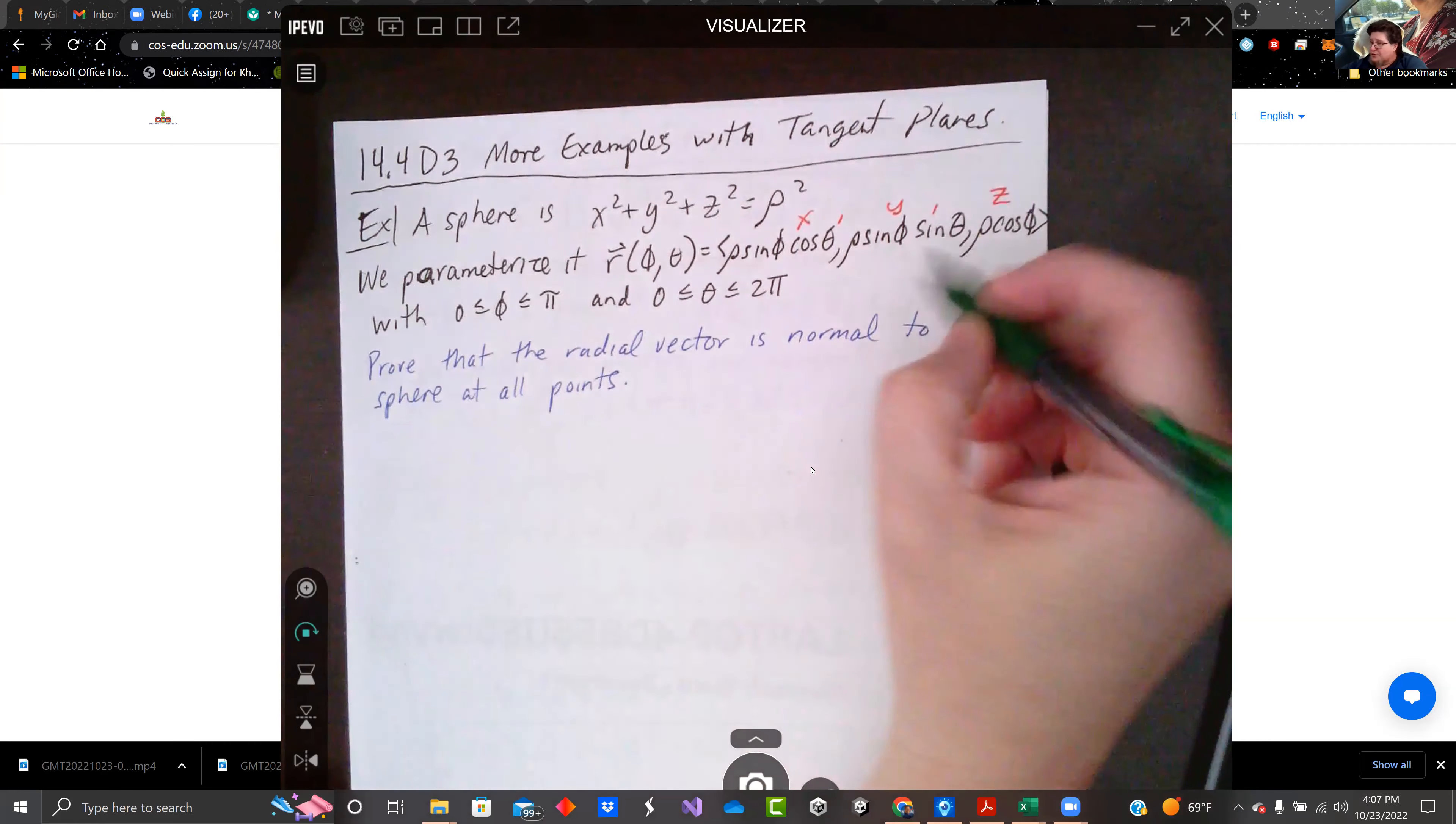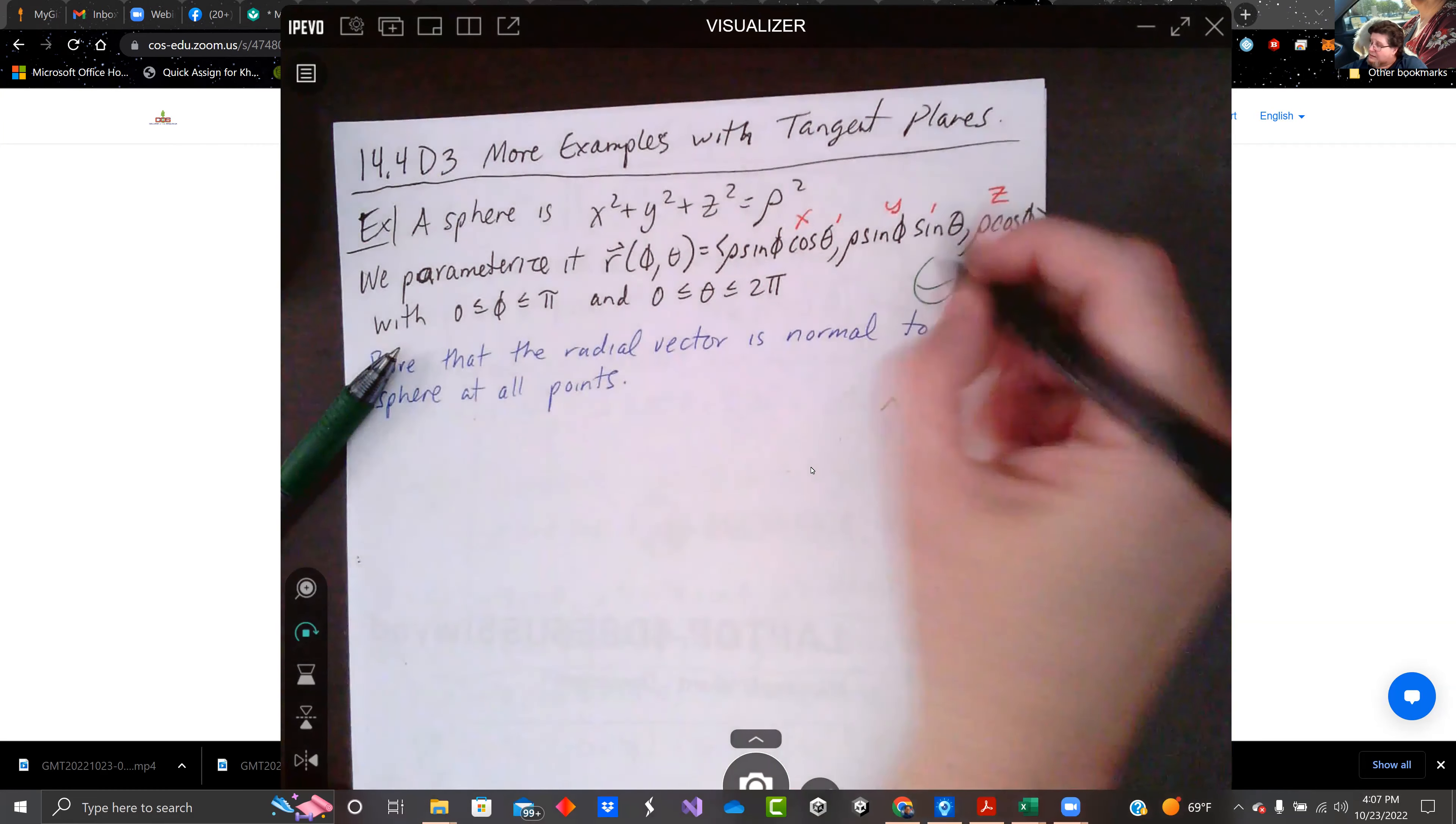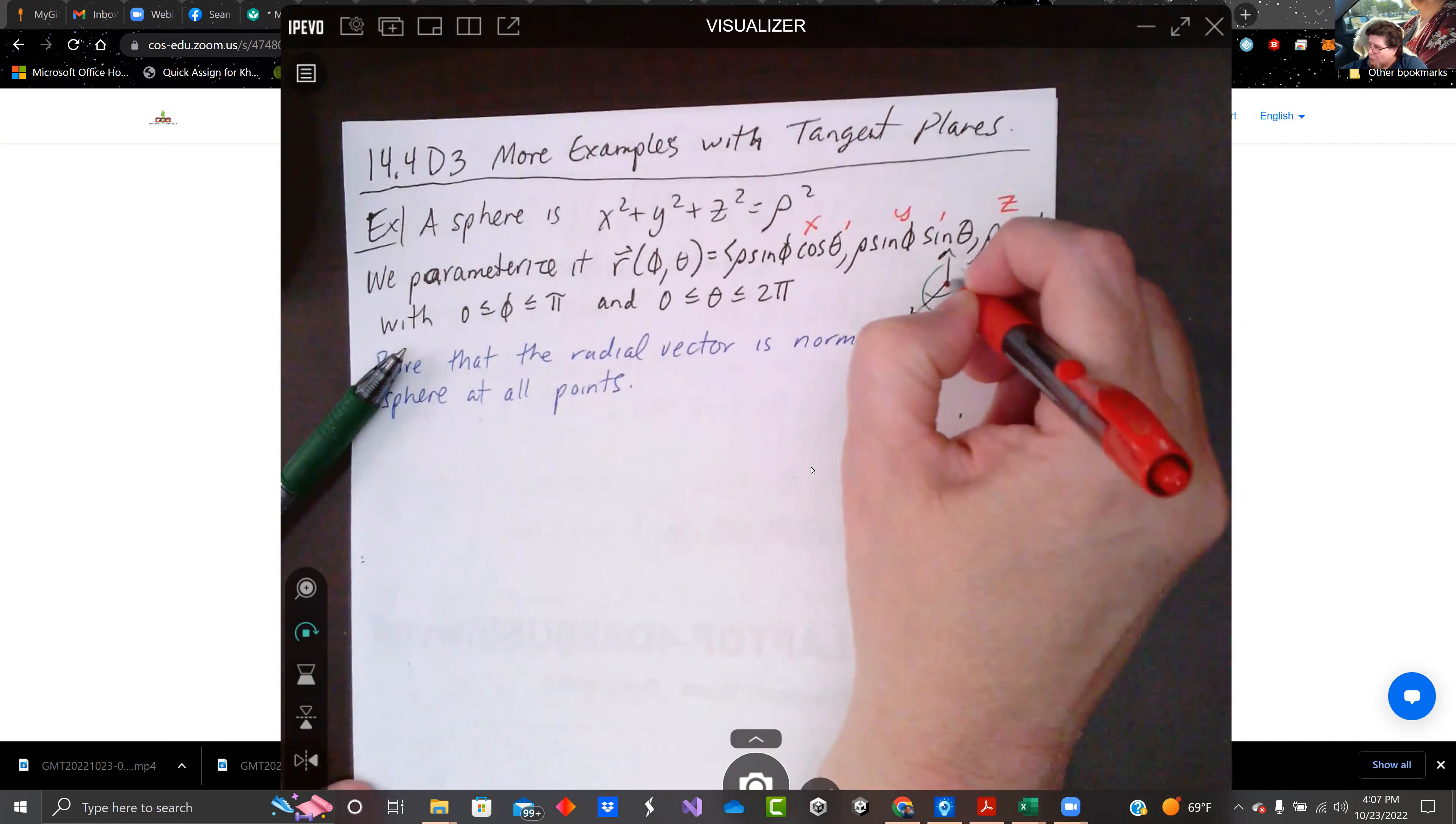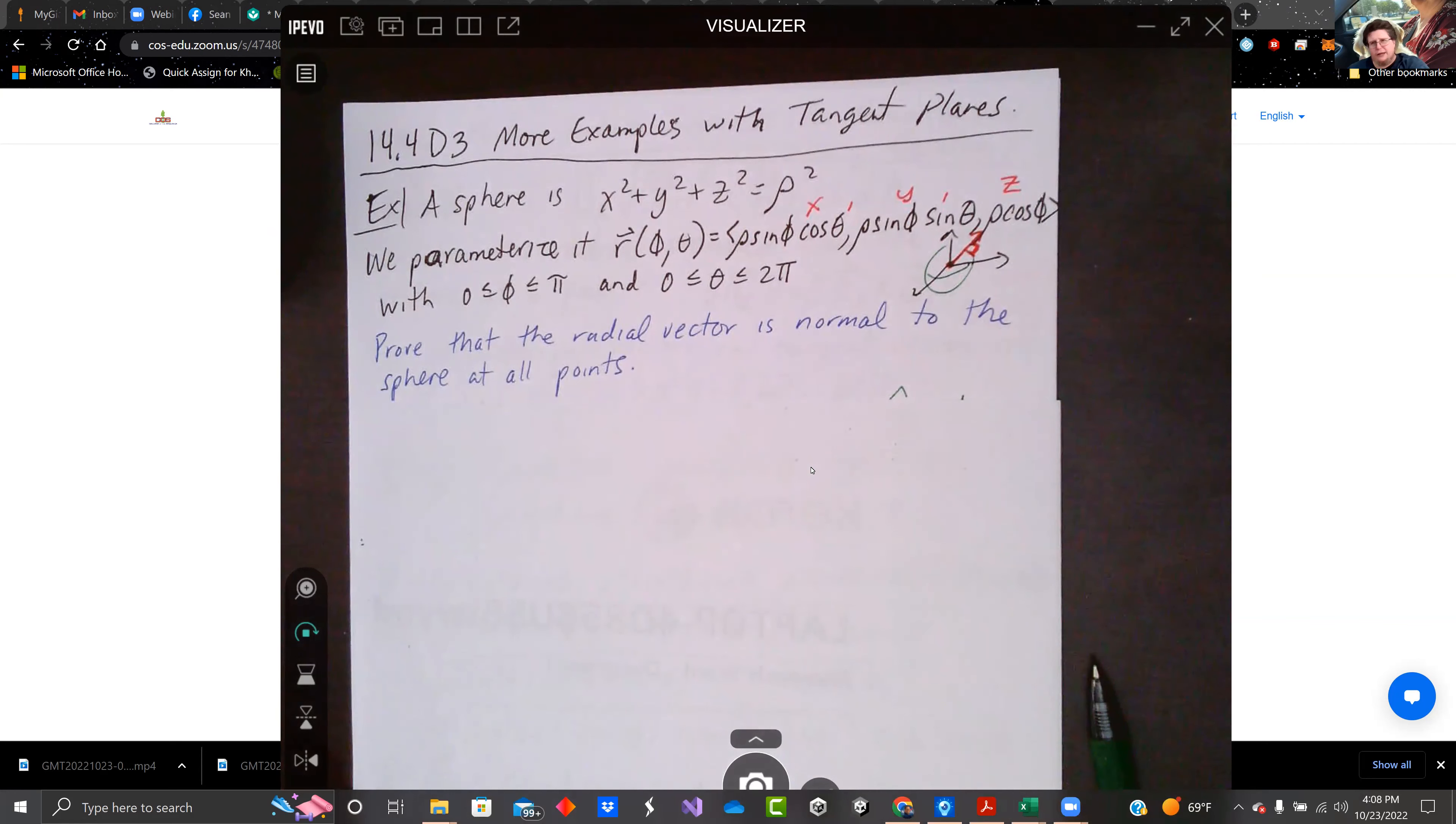I mean, we can kind of picture that. We got our x, y, z. And any point from the origin to the surface, wherever it intersects that surface, should make a right angle, be orthogonal to it. So it makes sense normally in our head. Let's just prove it.